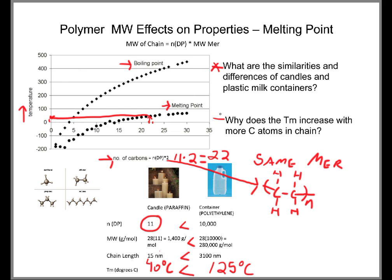The real question is, why does the melting temperature increase with more carbon atoms in the chain? The reason is because they have longer chains. Between those longer chains, we have more van der Waals bonds between the chains. Because we have more van der Waals bonding to overcome, our melting temperature increases.